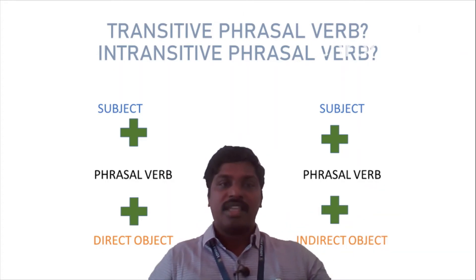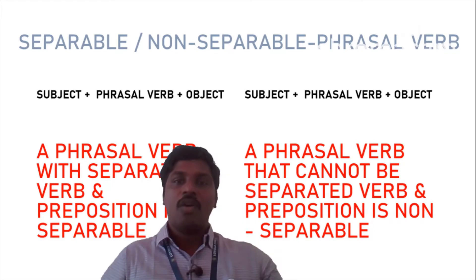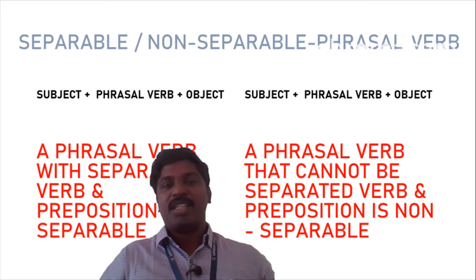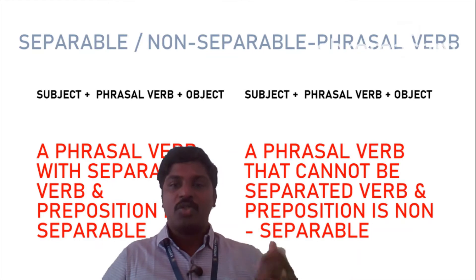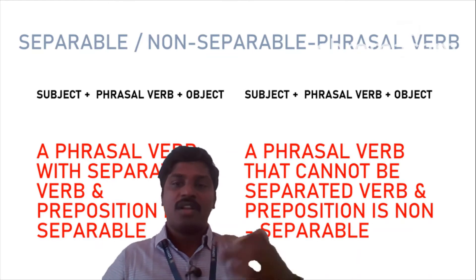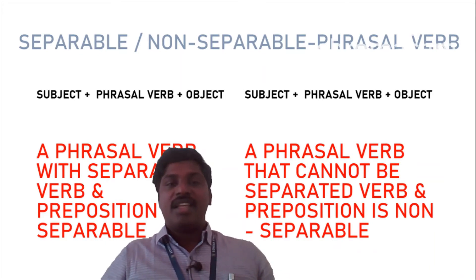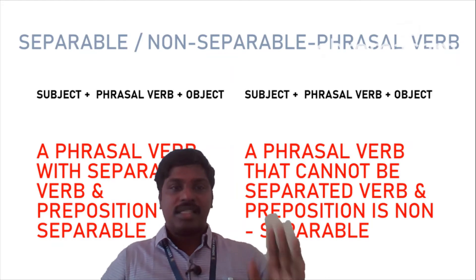We will move on to the second category. We have separable phrasal verbs and non-separable phrasal verbs. In a separable phrasal verb, there is a unique condition where the phrasal verb has at least two words - one of the words would be a verb. Even if you cut into the middle of the phrasal verb and use the object in the middle of it, it would still make sense.